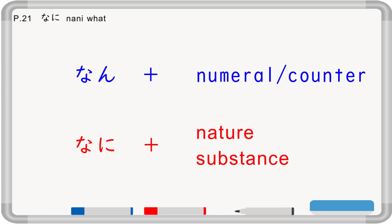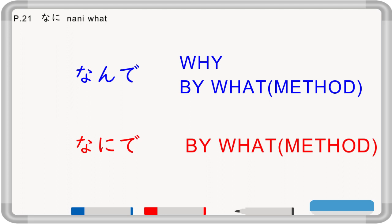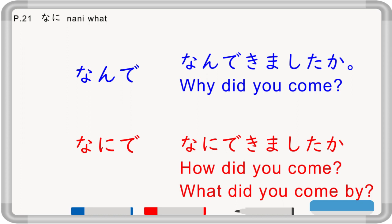So, nan is followed by a numeral or counter. Nani is followed by a noun of nature or substance. And nande means 'why', or sometimes 'by what' to ask method. Nani de is specifically to ask method. For example, 'nande kimashita ka?' means 'why did you come?', while 'nanide kimashita ka?' asks how you got here — to answer 'basu de kimashita' or 'takushii de kimashita'.